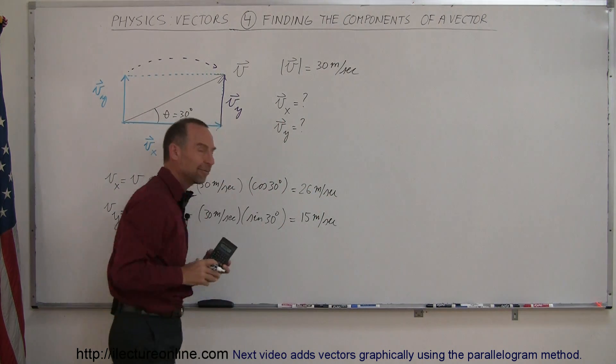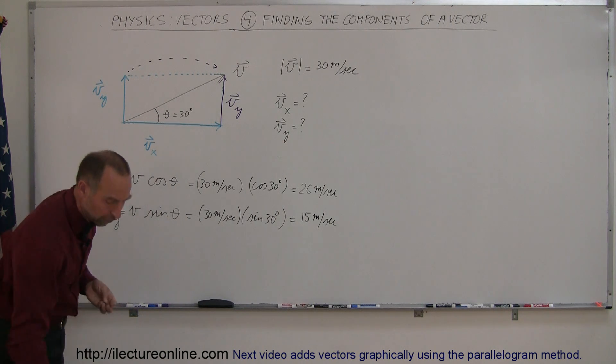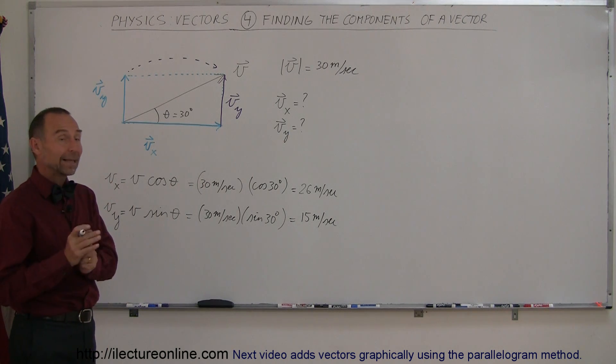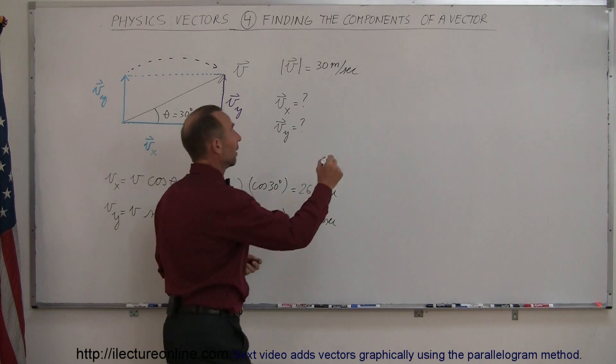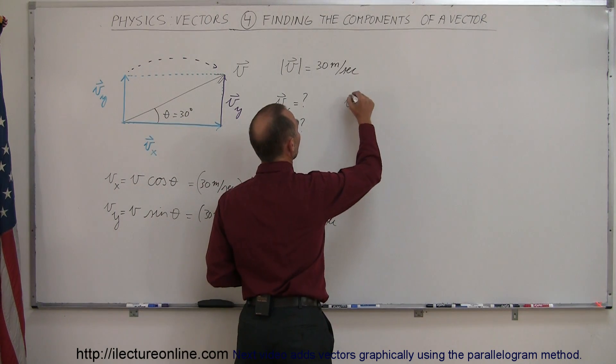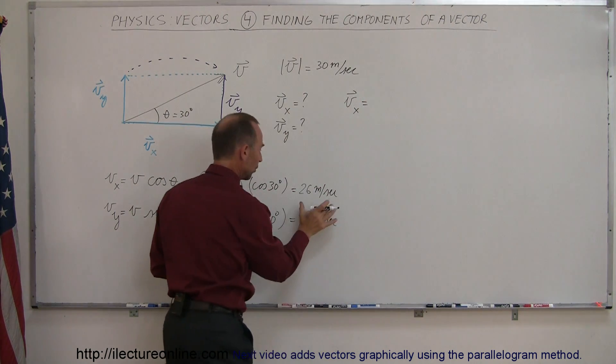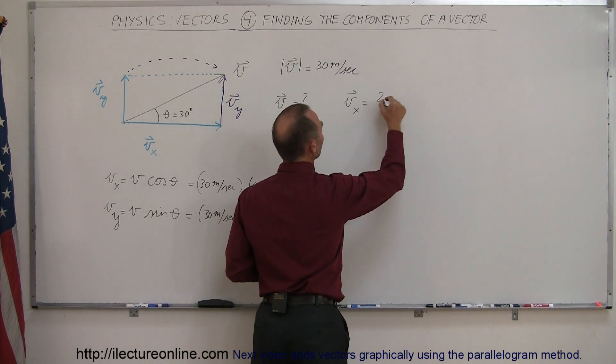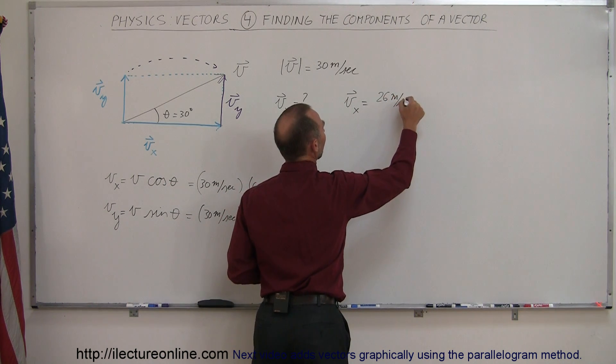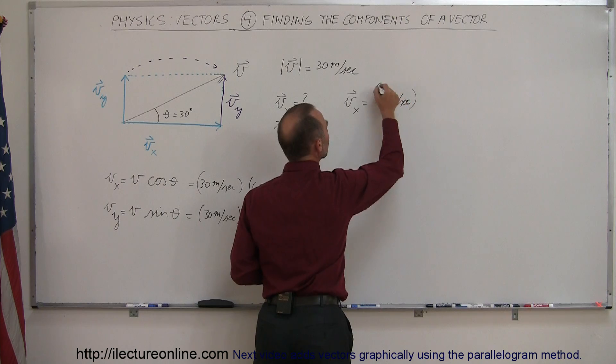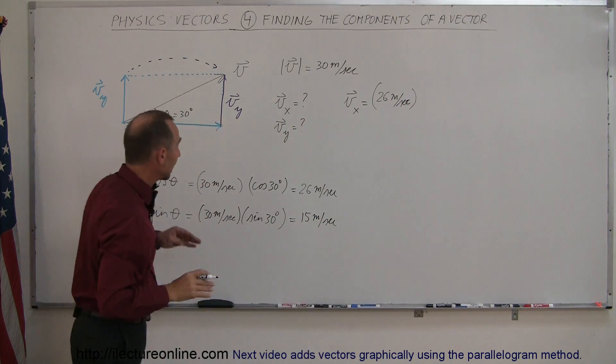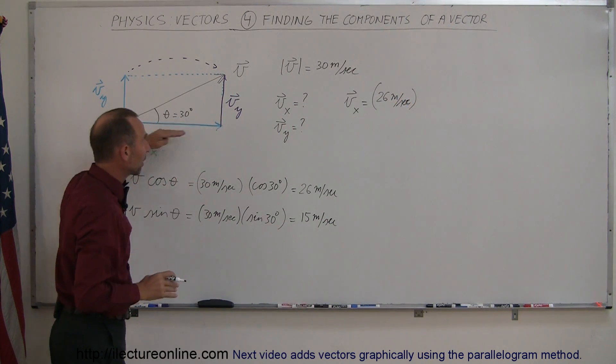So now I have the magnitudes of the x and the y components of the velocity. So if I want to write that in a vector format, I can write that v sub x is equal to the magnitude, which we have here, 26 meters per second, and times the unit vector in the direction that it's pointing.